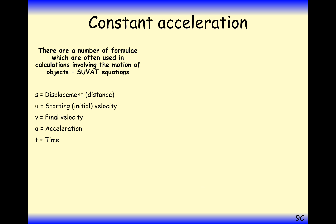So, what does SUVAT mean? It's not a word, but it's an abbreviation of S, U, V, A, and T, where each letter stands for an element within how a particle moves. S stands for displacement, U is initial velocity, V is final velocity, A is acceleration, and T is time.